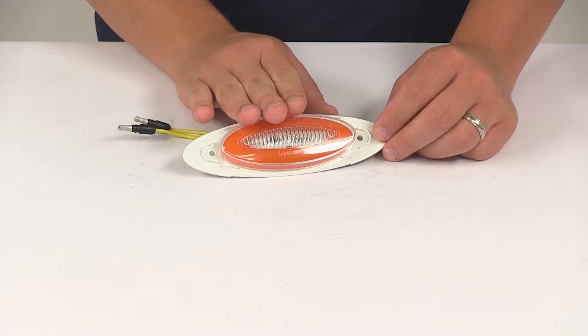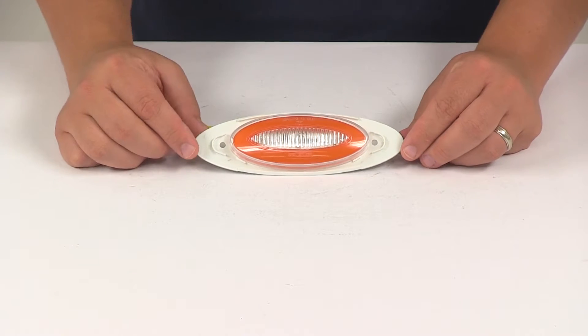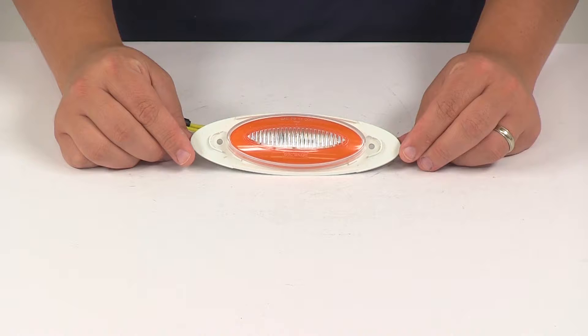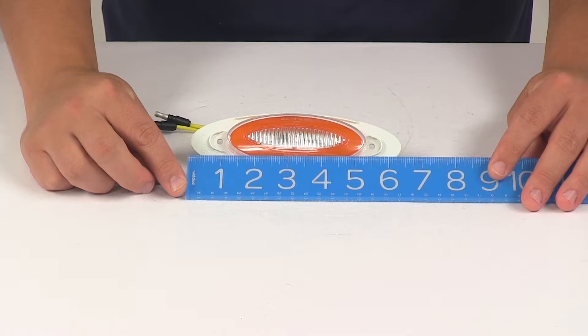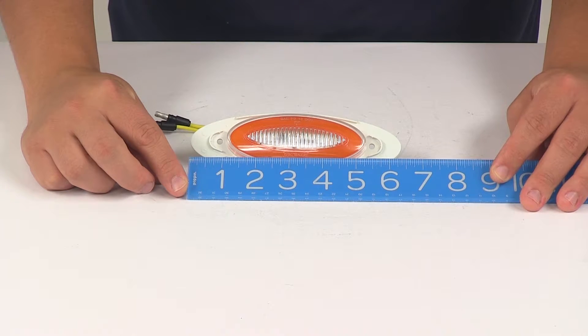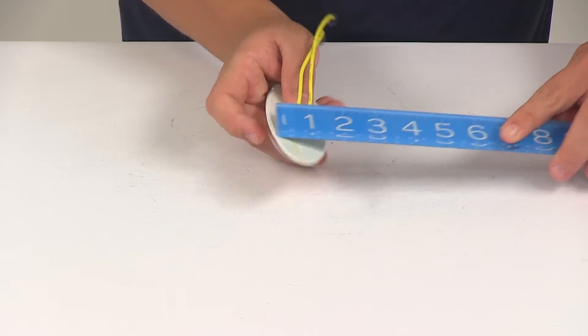This is a P2 rated light that's SAE and Department of Transportation compliant. For measurements, starting with the overall length measuring edge to edge, it's about six and three-eighths of an inch. Going this direction, we're looking at about two inches.